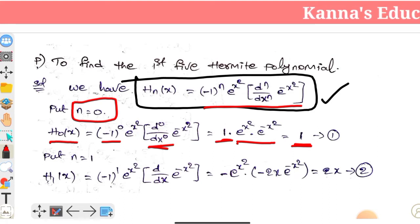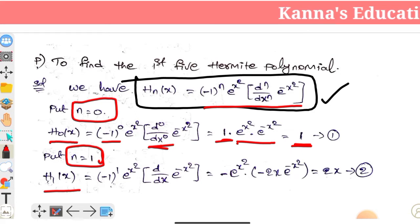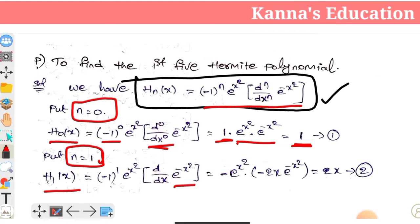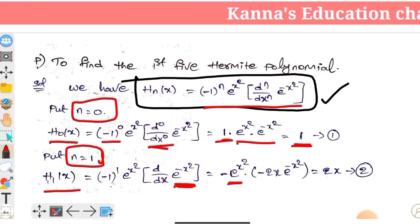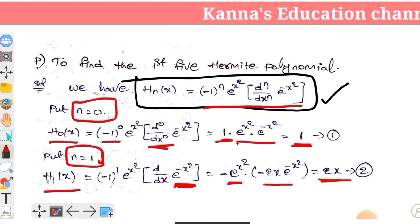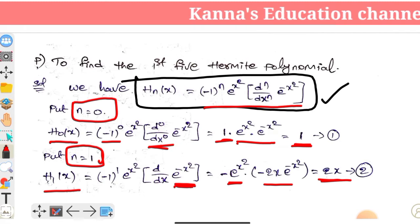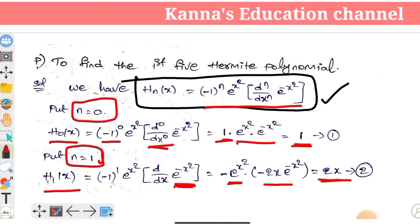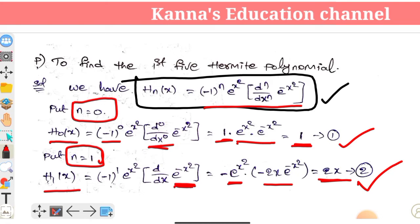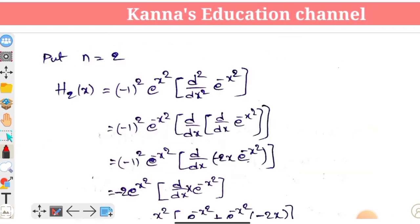Now put n equal to 1. H₁(x) equals minus 1 to the power 1, times e to the power x squared, times d by dx of e to the power minus x squared. The derivative of e to the minus x squared is minus 2x times e to the minus x squared. So minus 1 times e to the x squared times minus 2x times e to the minus x squared equals 2x. So H₁(x) equals 2x.